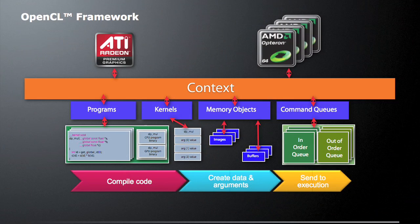Let's assume we have a context, and this context has two devices in it — on the left an ATI GPU, and on the right AMD multi-core CPUs. There are three basic steps you're always going to use to submit work to these devices. The first thing you're going to do is compile code. We have program objects which will take our source code — we'll actually build those programs once we've loaded the source code from disk or from a string. We're going to get a kernel object, which will have the actual code that's going to be run on the different devices, as well as the arguments to those kernels when we execute them.